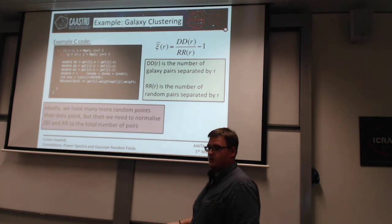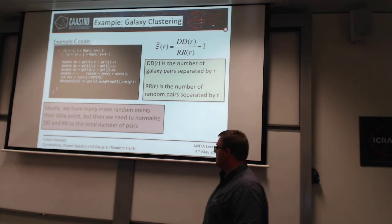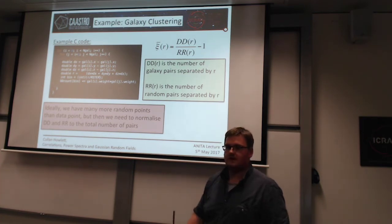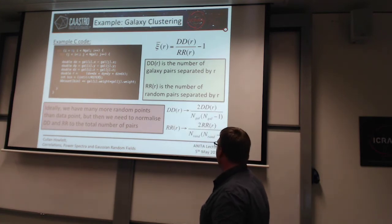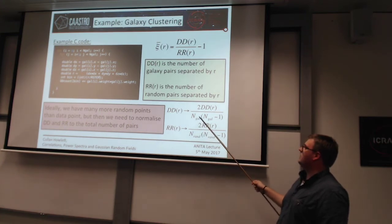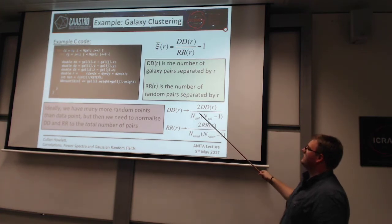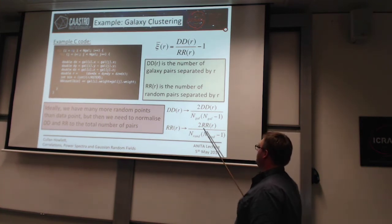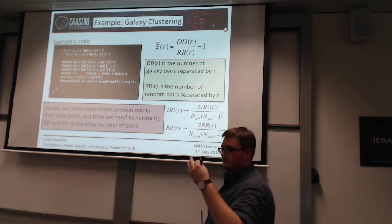Ideally, to reduce noise in this estimator, you want as many random data points as possible. So you could have a thousand galaxies but you want a million random points scattered across the surface. Then you need to normalize by the number of galaxy pairs — which by combinatorics is N_galaxies squared minus N_galaxies over 2, and similarly for random points. This normalization factor is just the number of unique pairs you can get when looping over your list.